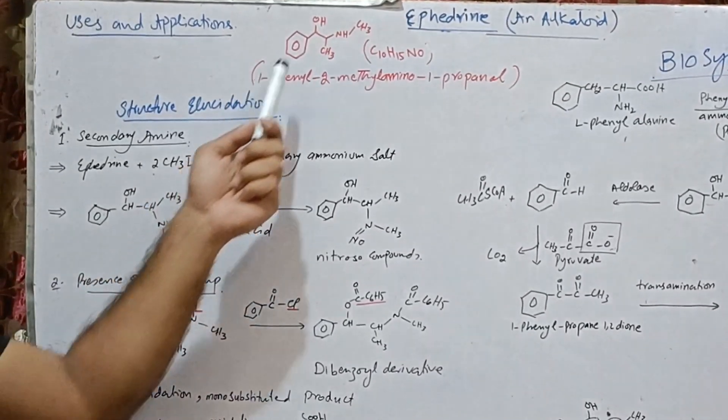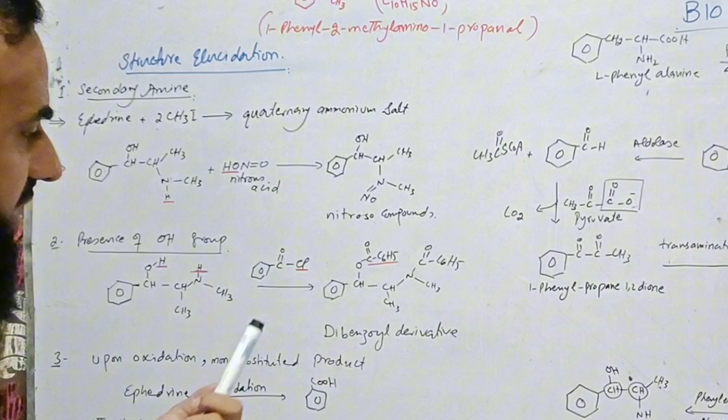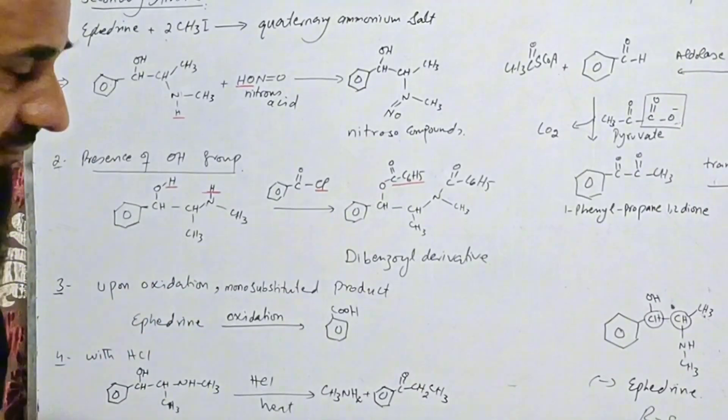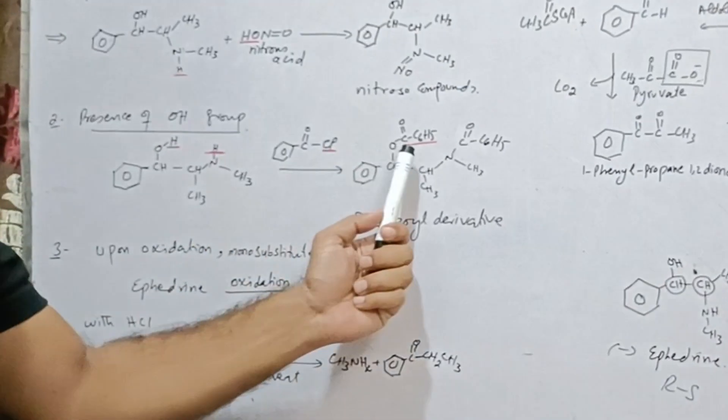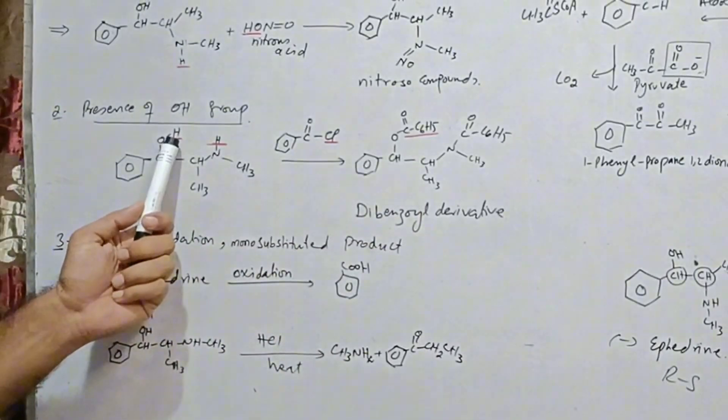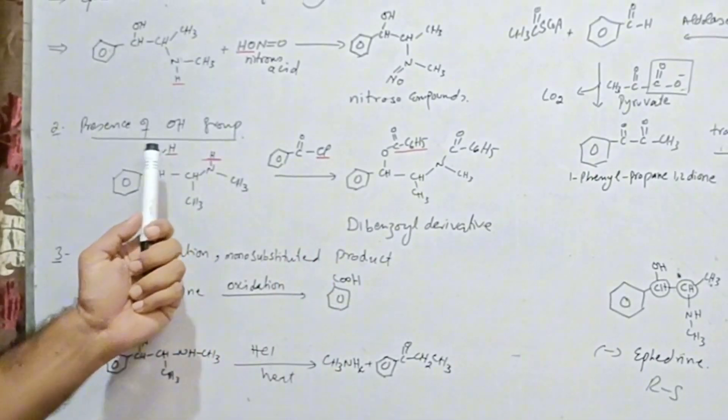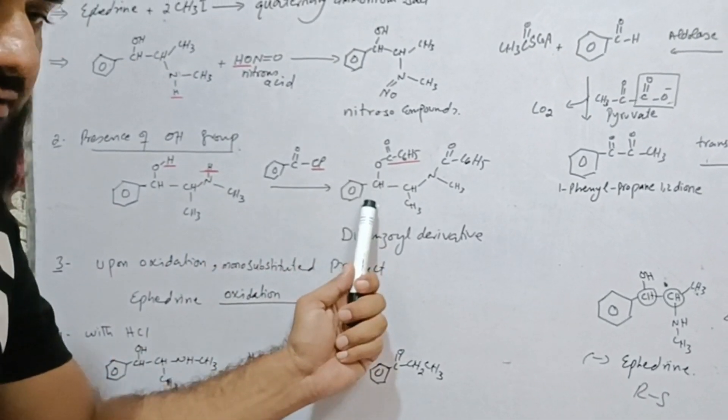There is also an OH group. So how we can check this group? We treat this with benzoyl chloride. As we see the reaction, this H and the chloro group, these are removed and benzoyl derivative is obtained.